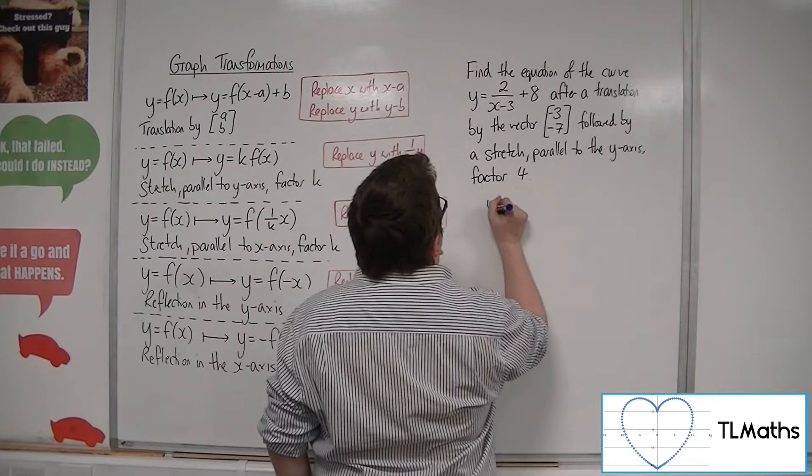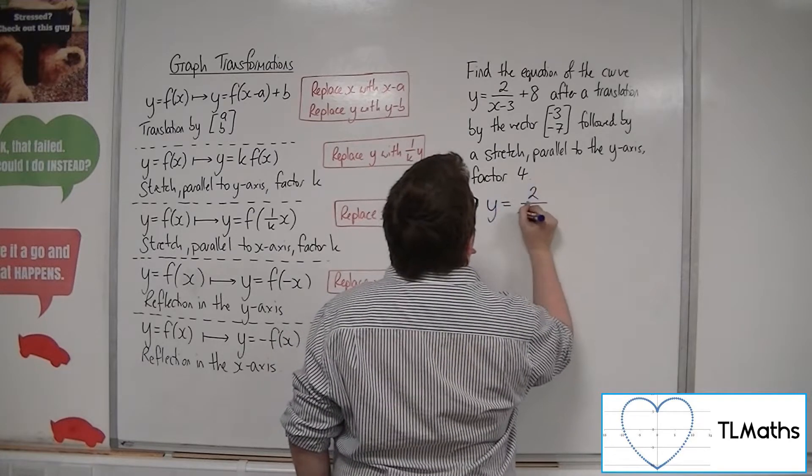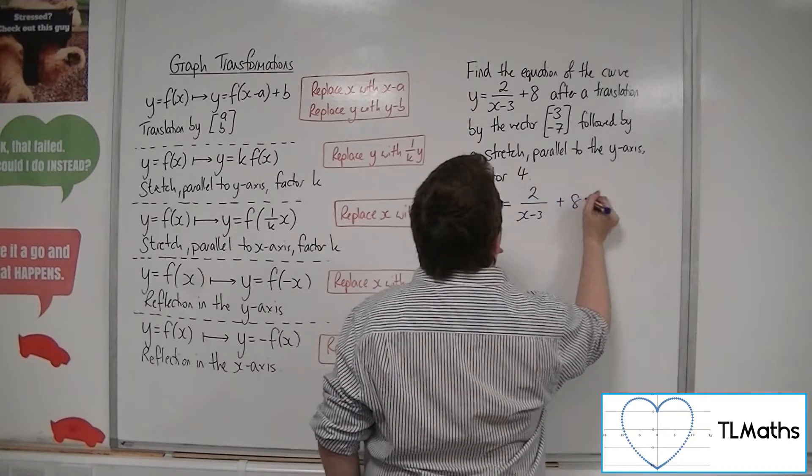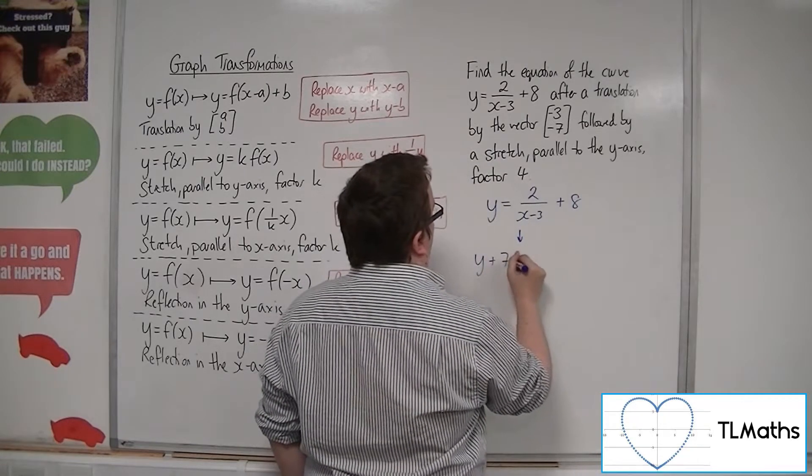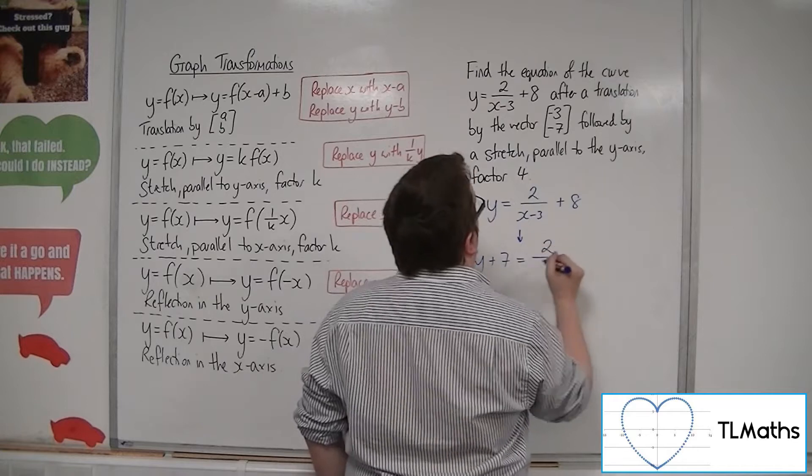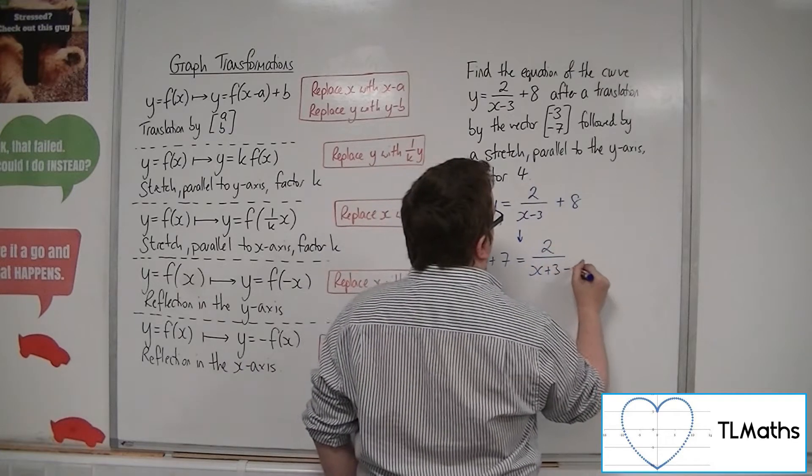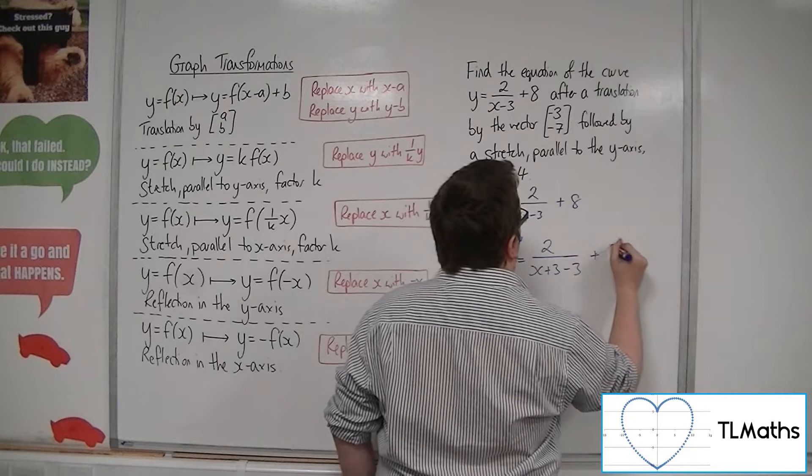So we're going to go from y equals 2 over x minus 3 plus 8 to y plus 7 equals 2 over x plus 3 minus 3 plus 8.